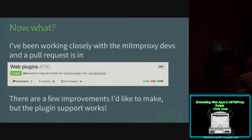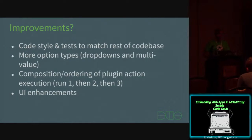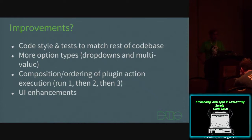So now what? I've been working closely with the MitmProxy developers and a pull request is in with about 8,000 changes. There are a few improvements I'd like to make: code style to match the rest of their code base, finishing out the unit tests I started, adding more option types for the UI, maybe adding some kind of composition or ordering for plug-in action execution — though I think that's really not even necessary — and UI enhancements since the CSS is a little wonky still.